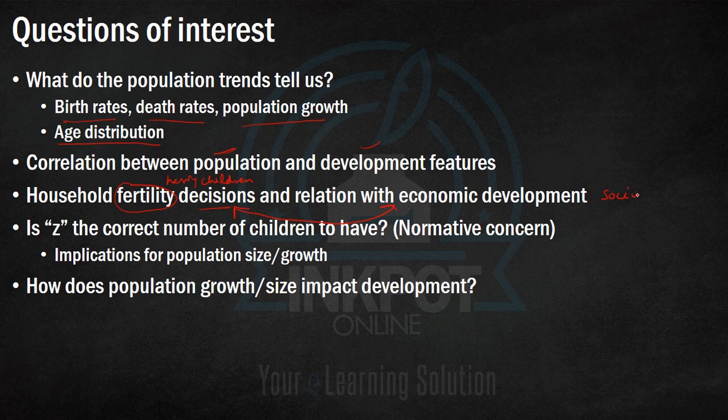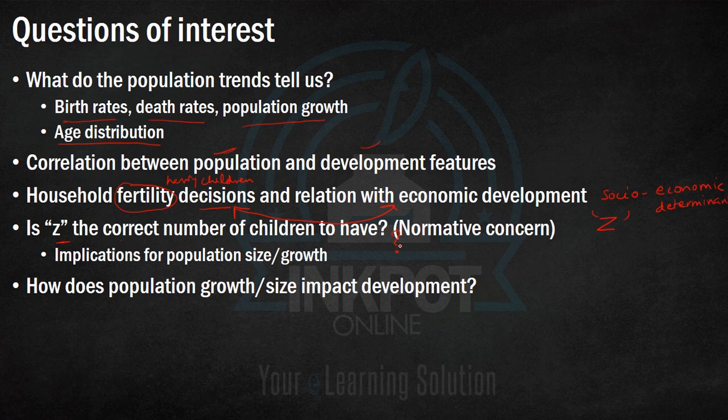Does the country's economic status or development status affect these fertility decisions? We are going to look at the socio-economic factors which determine fertility decisions and choices. Further, let's say the household decides to have Z number of children — our task is to understand whether this Z, chosen by the households, is the correct number of children from a societal point of view.